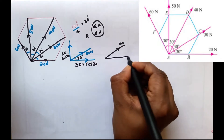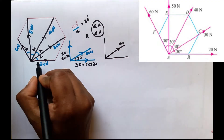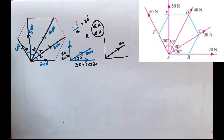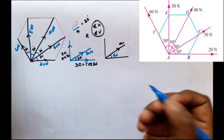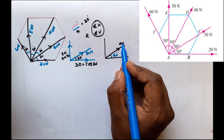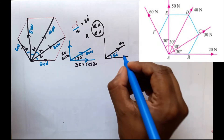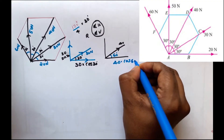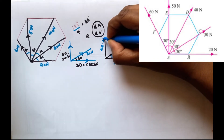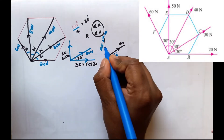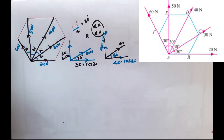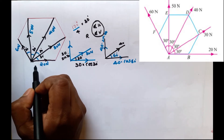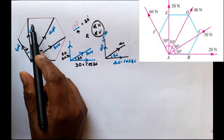For the 40N force, it creates an angle of 30 plus 30 = 60 degrees with the horizontal. So the horizontal component is 40 cos 60 and the vertical component is 40 sin 60. The 50N force acts vertically — at 90 degrees.